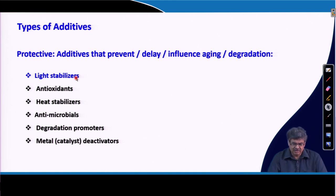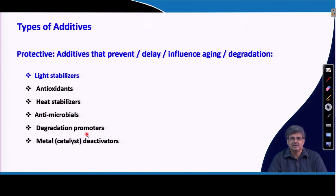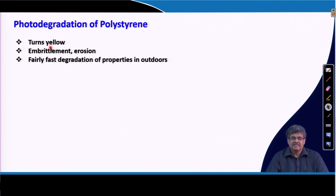In this lecture I will talk about one example for each case. Let me discuss light stabilizers. Light stabilizers are required when polymers are prone to deteriorate in the influence of light. For example, photo-degradation of polystyrene — if we keep polystyrene under light for long duration, it turns yellow, becomes brittle.